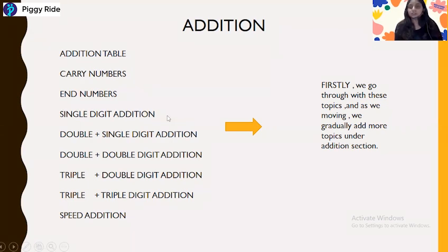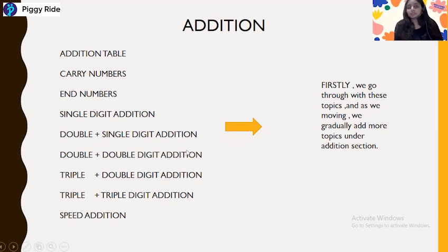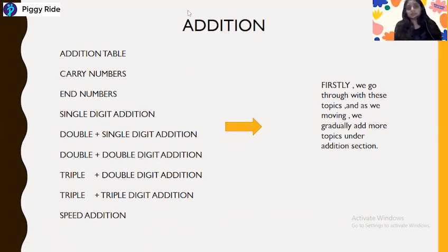In English we can also call it the dropping tens method. Next we have also seen the double plus single digit addition in both carry and non-carry numbers. Next we have seen the double plus double digit addition, and I have given you homework. In today's class we will discuss double plus double digit addition where both the ones place and the tens place are carry numbers.